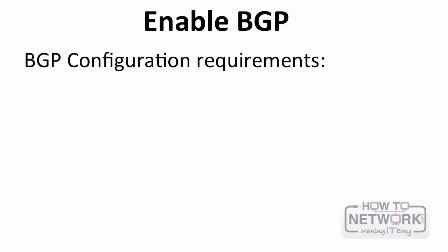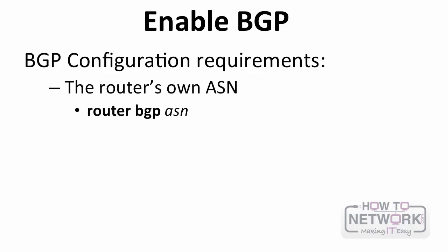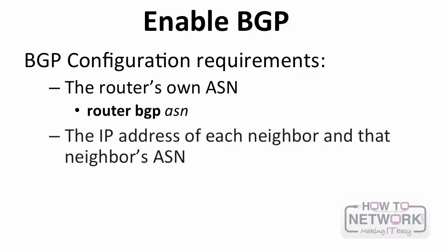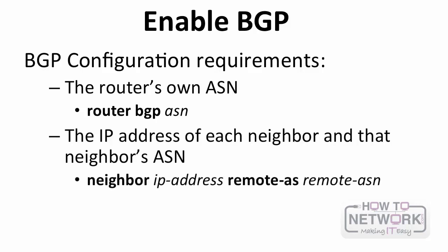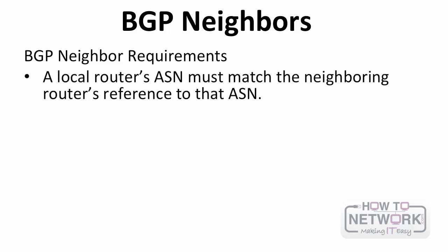There are certain requirements you need to know about when you enable BGP. You need an autonomous system number — you type in 'router bgp' and that autonomous system number, which is normally assigned to you. Then you need to know the IP address of each neighbor you'd like to communicate with. You type in 'neighbor,' the IP address, and their remote AS. For example: router bgp 1, neighbor 10.1.1.2, remote-as 2.